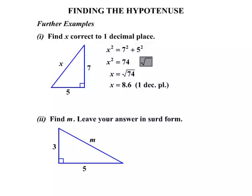Our second example, we're asked to find m, but this time we leave our answer in surd form. Okay, we'll have to get back, what does surd form mean? Let's see that. Let's start with m, it's the hypotenuse, it's the longest side, so we write m squared equals.